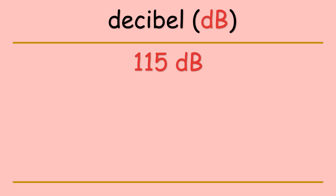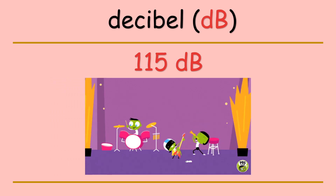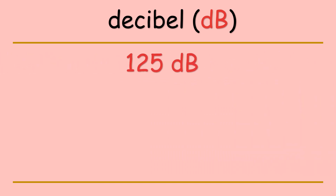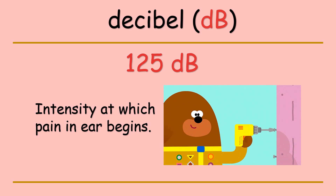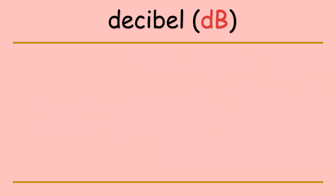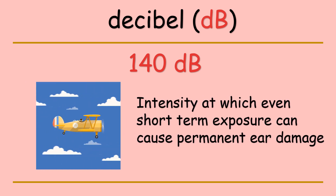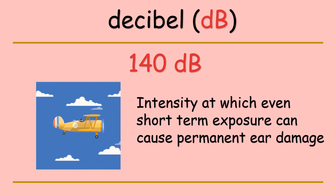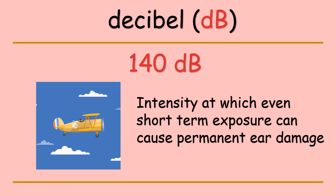At 115 to 120 decibels, it is the sound from a loud rock concert. At 125 decibels, when you have a driller at 0.5 meters away from you, it is the intensity at which pain in the ears begins. And last, at 140 decibels — the sound of a jet engine — this is the intensity at which even short-term exposure can cause permanent ear damage.